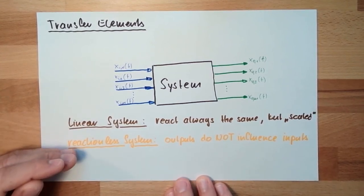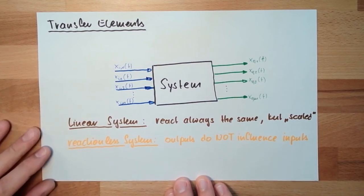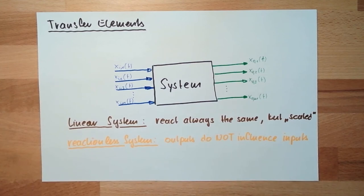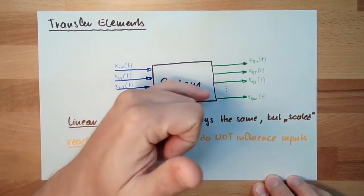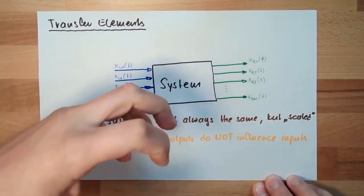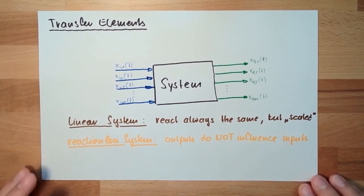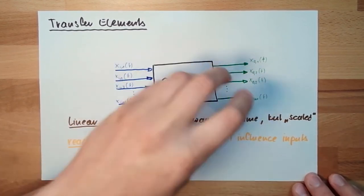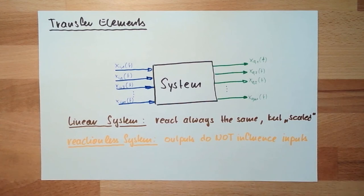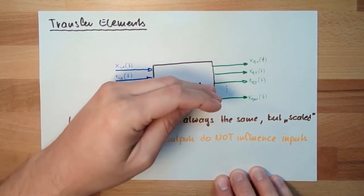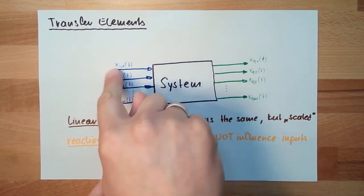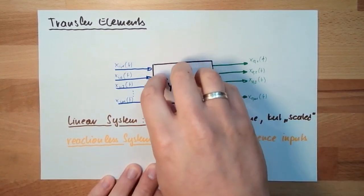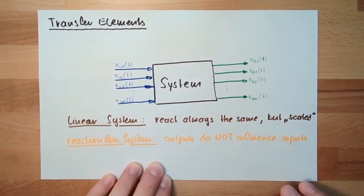And the reaction-less system is also not always given in reality. Let's think about our house. We want to warm our house. Our system is our house, and we are heating it up. So there is heating power going inside, and the output is the room temperature. And another input, the disturbance, is the outside temperature. The outside temperature, if it's cold outside, it will disturb our system, and I need to react on this. And now I heat up our system, our house is warming the surrounding. So our disturbance, which is an input, is directly influenced by the output, by the room temperature. So this is not reaction-less.